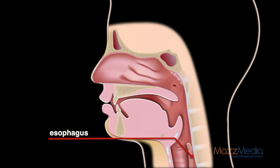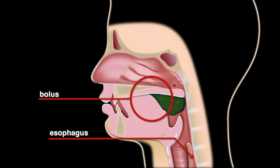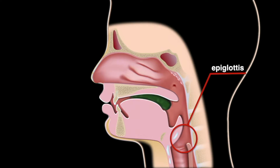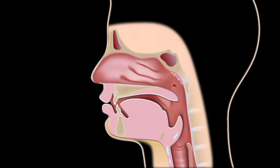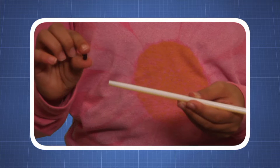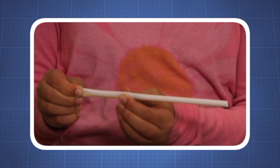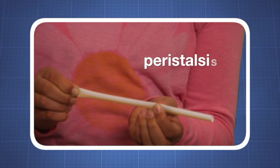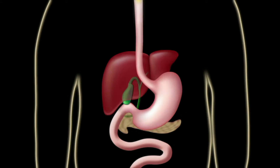The esophagus is a stretchy pipe a little over 25 cm long and 2.5 cm in diameter. It moves food from the back of your mouth to your stomach. When you swallow a bolus, a special flap called the epiglottis flaps down over your windpipe to make sure food enters the esophagus. Muscles in the walls of the esophagus squeeze the food through in a process called peristalsis. A straw represents the esophagus, and a bean represents the bolus — fingers acting like muscles squeeze the food down in one direction.